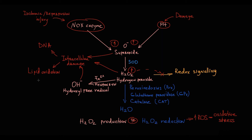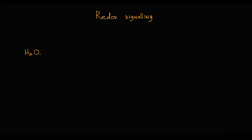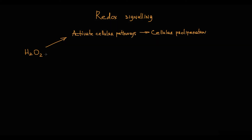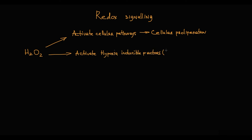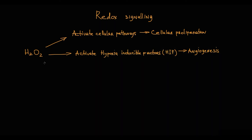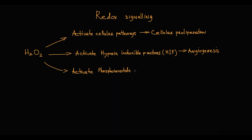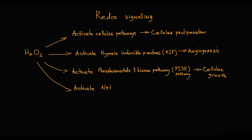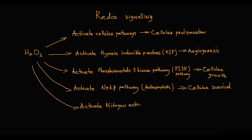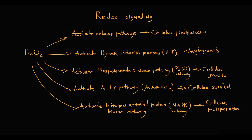To illustrate the importance of redox signaling, consider cellular metabolism. Hydrogen peroxide is required for activation of multiple cellular pathways controlling cellular proliferation. It activates hypoxia-inducible factors that regulate angiogenesis, it activates the phosphoinositide 3-kinase pathway that regulates cellular growth, it activates the NF-κB pathway that in normal conditions prevents apoptosis and thereby regulates cellular survival, and it activates the mitogen-activated protein kinase pathway that regulates cellular proliferation.